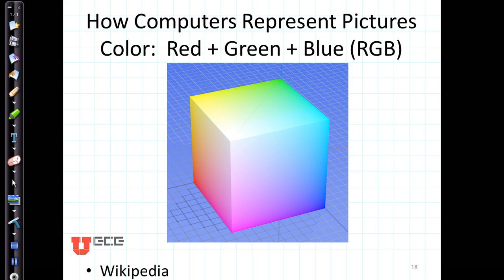Computer represents color as combinations of red, green, and blue, called RGB. You can see the red corner, green corner, and blue corner of this curve, and as you add different combinations, you can actually get any color in the color system.